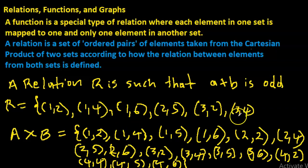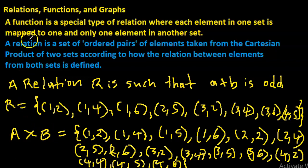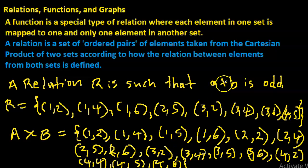Continuing to find R where a plus b is odd: we have two-five, three-two, three-four, three-six, and four-five. Notice that R is a set of ordered pairs — we ordered all pairs from the Cartesian product according to how the relationship is defined. Here the definition is that a plus b is odd.